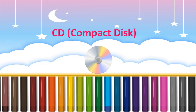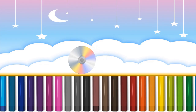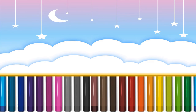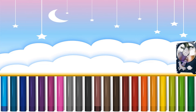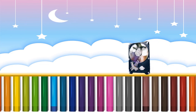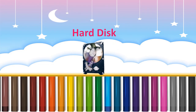Pen Drive. It is a storage device used to store data. CD stands for Compact Disc. It is a small plastic disc which is used to store information. Hard Disk, or hard drive, is also used to store data. It is located inside the CPU.